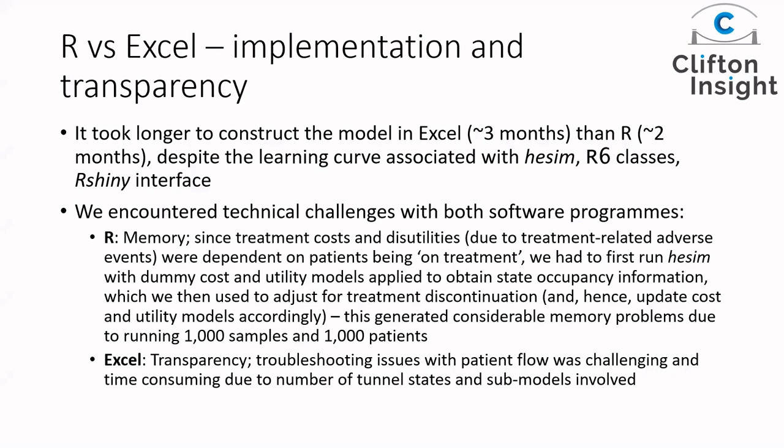The main problem we encountered in R was related to memory. With treatment costs and disutilities, we needed to adjust based on time patients spent on treatment. To do that, we needed state occupancy information — so we ran Heemod in the first instance with dummy costs and utility data to get that, then updated our cost and utility models with state occupancy information to adjust for treatment discontinuation. This resulted in massive cost and utility tables. There's also a space issue related to running 1,000 samples and ideally 1,000 patients. So far we have it running with 1,000 samples and 100 patients, and we're still exploring solutions.